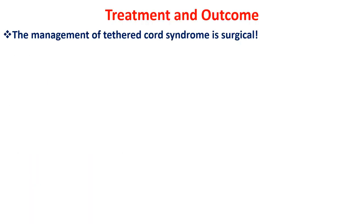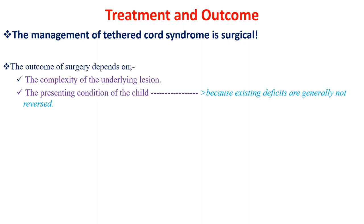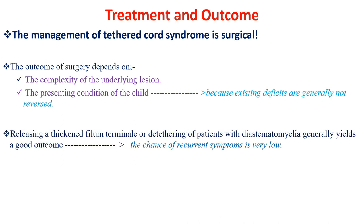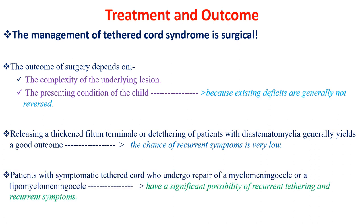The management of tethered cord syndrome is always surgical; there is no non-surgical management. The outcome of surgery depends on the complexity of the underlying lesion and the presenting condition of the child. Releasing a thickened filum terminale or detethering in diastematomyelia generally has a good outcome with a very low chance of recurrent symptoms. Patients with symptomatic tethered cord who undergo repair of myelomeningocele or lipomyelomeningocele have a significant possibility of recurrent tethering and recurrent symptoms.